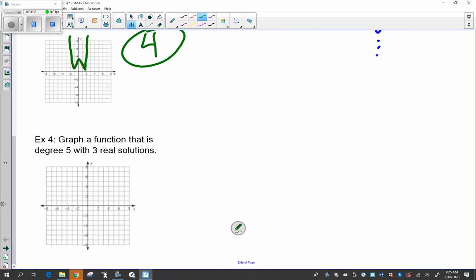And for example, example 4, we're going to actually have to graph this. So graph function is degree 5 with three real solutions. So we have three real solutions, it's got to hit the x-axis three times. So we come up, that's 1, go back down to hit 3, you could have it just bounce off the x-axis, that counts as 2, and a little more little quadratic shape in there.